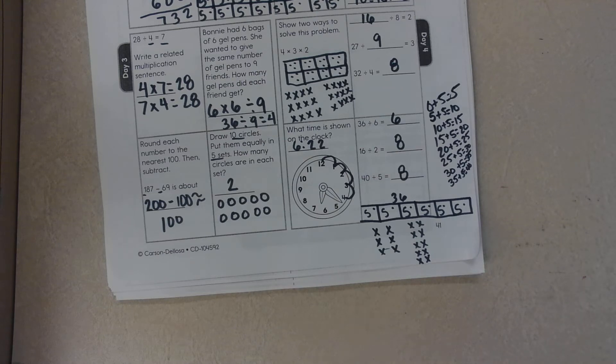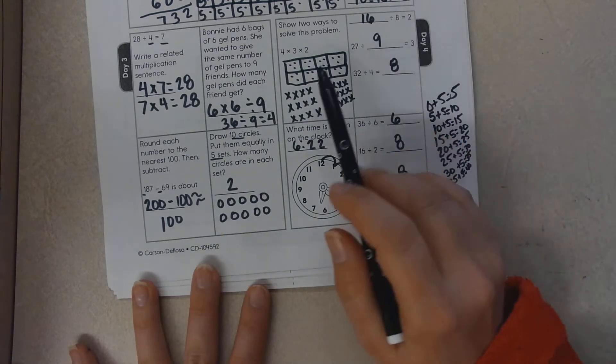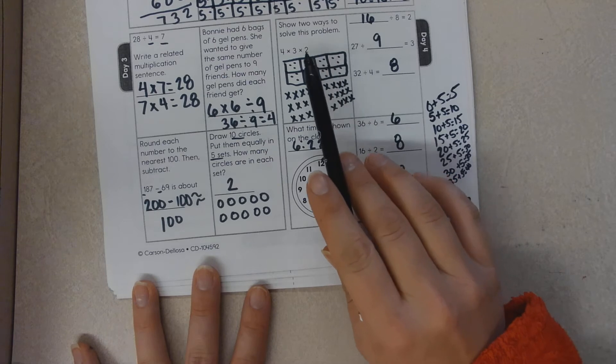Hello, boys and girls. We are on day four of week 17 math for today. The first thing it asked was to show two ways to solve this problem: four times three times two.